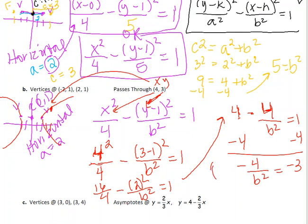I'm going to multiply both sides by b squared just to get rid of that b squared in the denominator. What you do to one side, you do to the other side. So, then this leaves me with negative 4 equals negative 3b squared divided by negative 3.